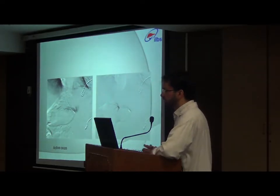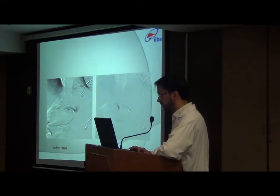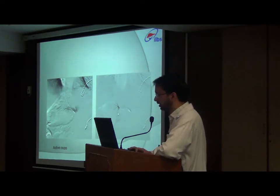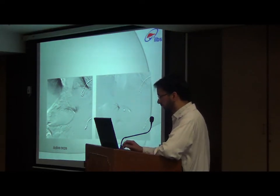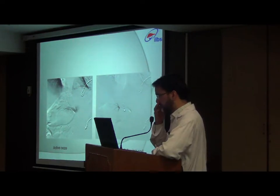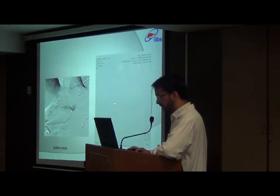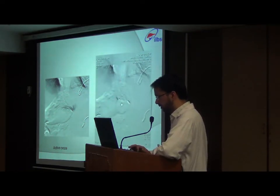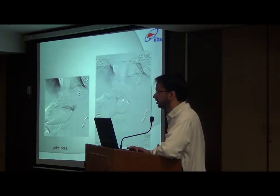A coil was placed in the branch of this left gastric artery. The post-procedure run shows filling of the main left gastric artery and its branches; however, this branch which was bleeding has been completely knocked off. Only a branch of the left gastric artery — and not the main left gastric artery — was coiled. The rest of the branches are filling and only the bleeding branch has been occluded.